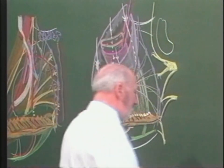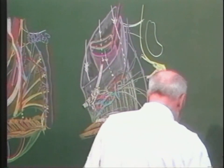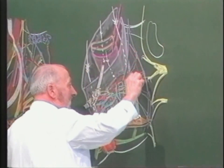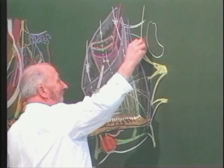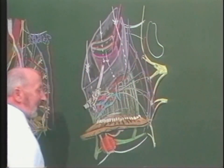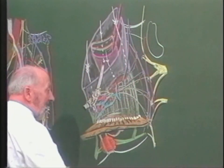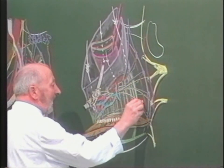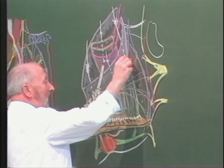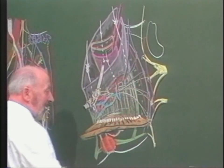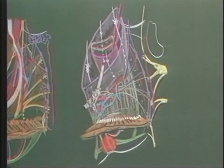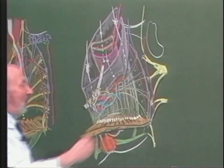Cette lame conjonctive laisse en arrière, devant le sacrum, les éléments vasculaires de l'artère sacrée moyenne, et latéralement les éléments de l'artère sacrée latérale. C'est l'espace rétro-rectal, séparé de l'espace péri-rectal et qui communique avec l'espace pararectal, l'espace pelvis sous-péritonéal.